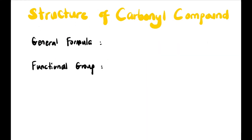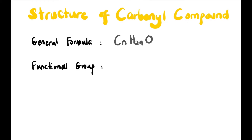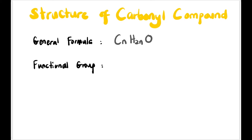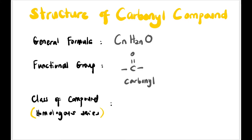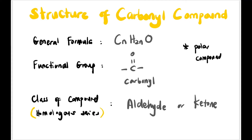Let's start with the structure of carbonyl compounds. The general formula of carbonyl compounds is CnH2nO. The functional group is the carbonyl group, C double bond O, and the class of compound or homologous series involved is aldehyde or ketone. A little info: carbonyl compound is a polar compound — C is partially positive and oxygen is partially negative.